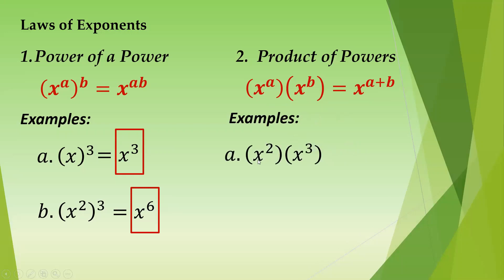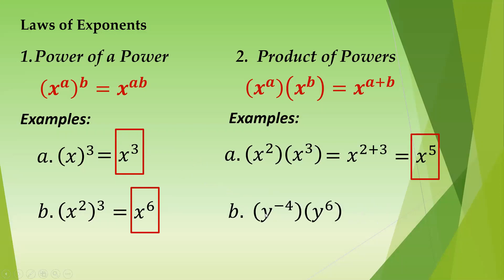Example: we have x squared times x cubed. The common error is to write x raised to 6 right away. The correct answer is x raised to 2 plus 3, same variable, add the exponents — we get x raised to 5. Second example: y raised to negative 4 times y raised to 6. Same property: y raised to negative 4 plus 6, so we get y squared.